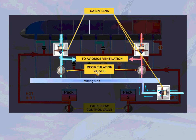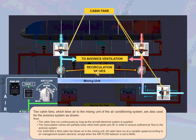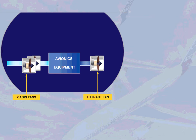All cabin fans run at a variable speed according to air management system demand, except when the airflow selector is set to MAN. Air blown by the two cabin fans to the avionics equipment is extracted by an extract fan. The extract fan operates continuously as long as the aircraft electrical system is supplied.